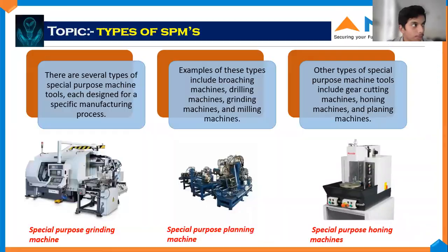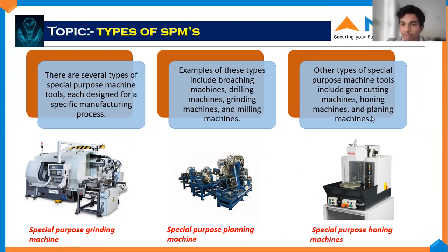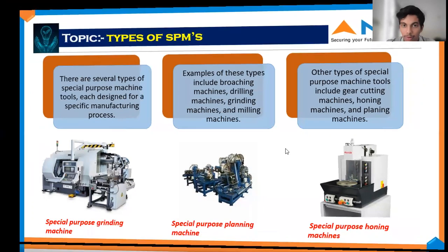There are many types of SPM machines. Some basic ones include broaching machines, drilling machines, and grinding and milling machines. There are also more specialized SPM machines used for gear cutting operations, shaping operations, and planing machines.